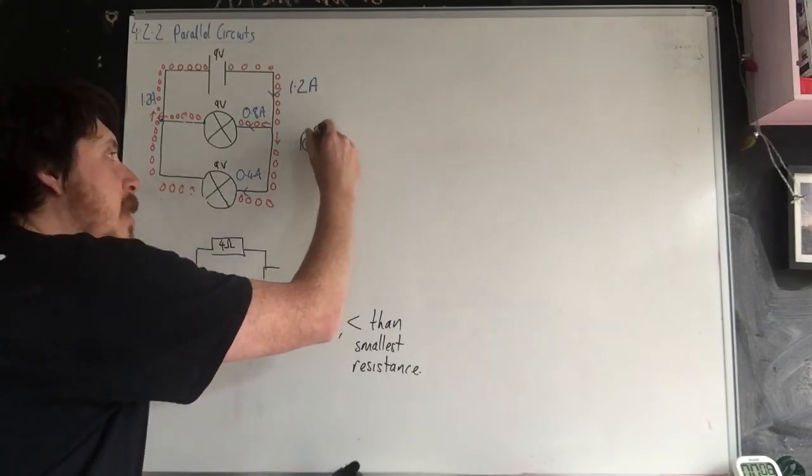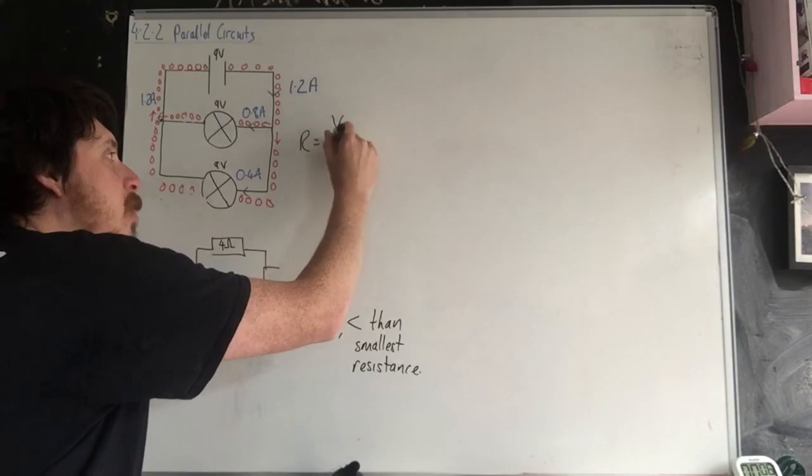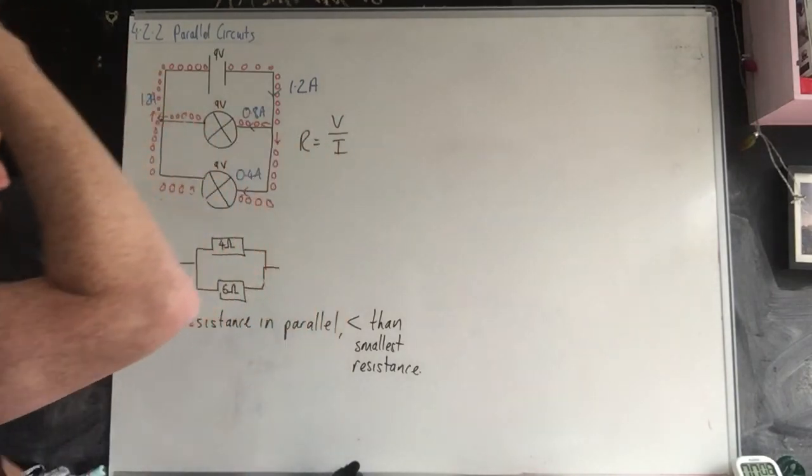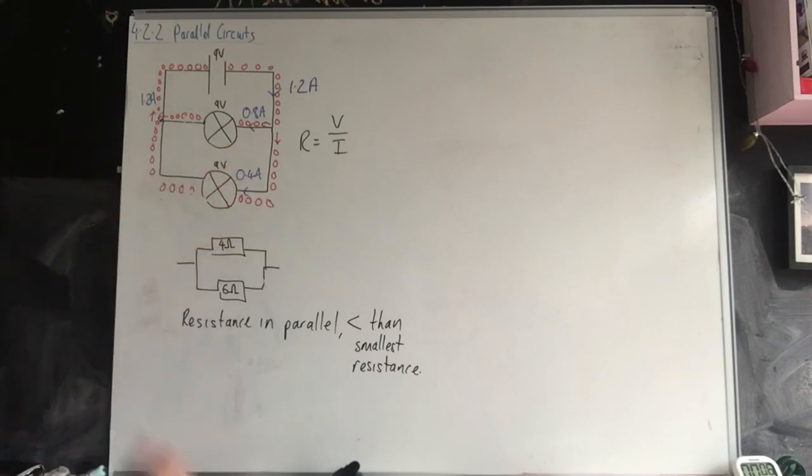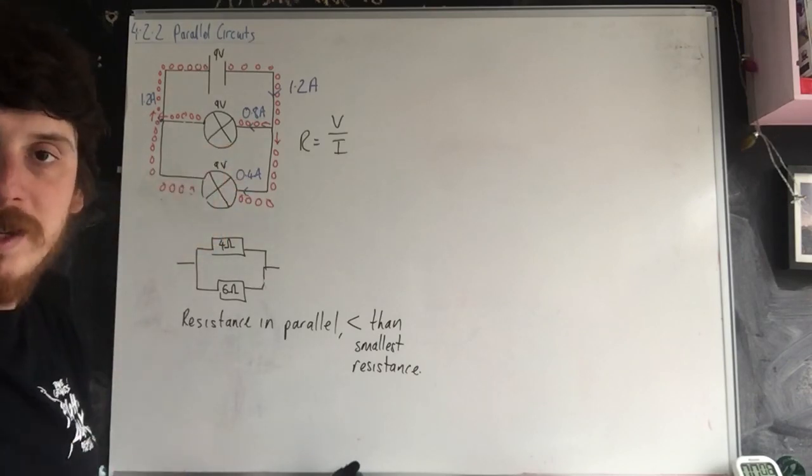You may be asked to apply the equation resistance equals voltage divided by current. Here we know the resistance is higher and the reason we know the resistance is higher is because we've got a lower current. And that's parallel circuits. Cheers!